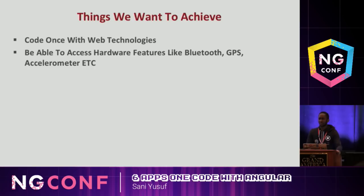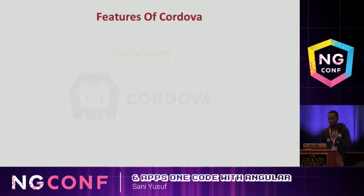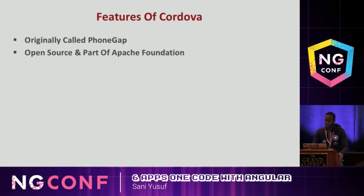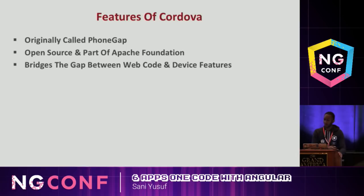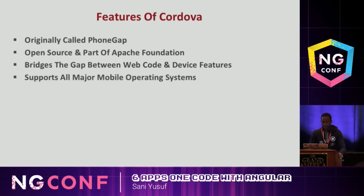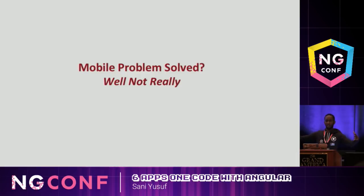Five years ago if you wanted to take a simple picture on a web application it was absolutely nuts - you had to use Flash, make sure the user had the right version. It was a very dark time. So this is where Cordova comes in. Cordova originally used to be called PhoneGap - there's a backstory about how Cordova and PhoneGap still exist. It's part of the Apache Open Source Foundation. It bridges the gap between the web code and device features - so now your web code can actually access Bluetooth, GPS, accelerometer, and all the things that Facebook uses to spy on you.